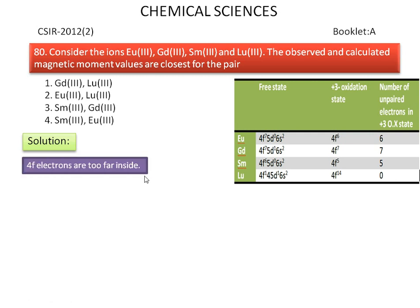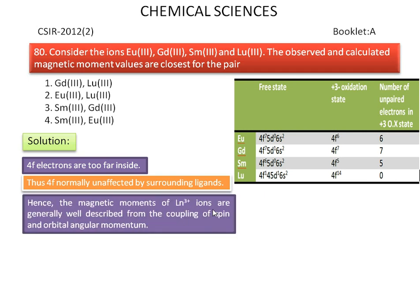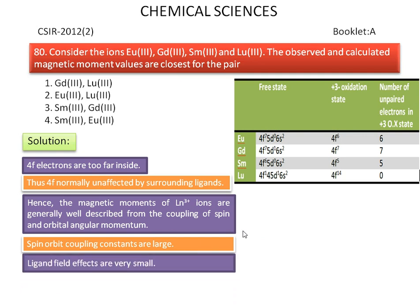Usually, the 4f electrons are too far inside, so the 4f is normally unaffected by surrounding ligands. Hence, the magnetic moments of lanthanide-3 plus ions are generally well described from the coupling of spin and orbital angular momentum. So, spin-orbit coupling constants are large. Ligand field effects are very small.